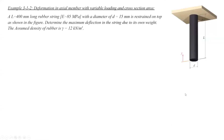Now let's look at one problem. There is a rubber string supported on top, hanging from that support under its own weight. The length of that string is 400 millimeters, the modulus of elasticity of the rubber is 85 megapascals, and the density is 12 kilonewtons per cubic meter. We want to determine the maximum deflection in that string. Note that in this problem there is no external force — it is only subjected to its own weight.